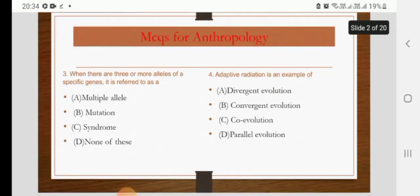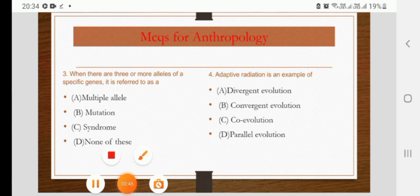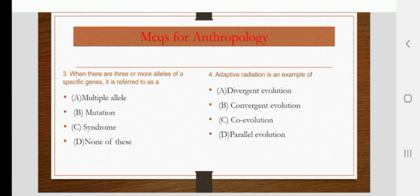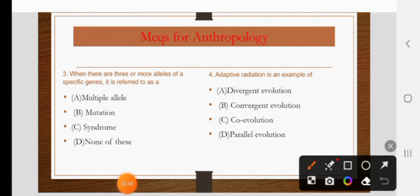When there are three or more alleles of a specific gene, it is referred to as a multiple allele, mutation, syndrome, or none of the above. The right answer is multiple allele.